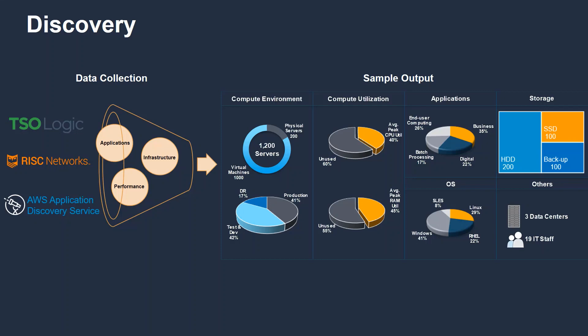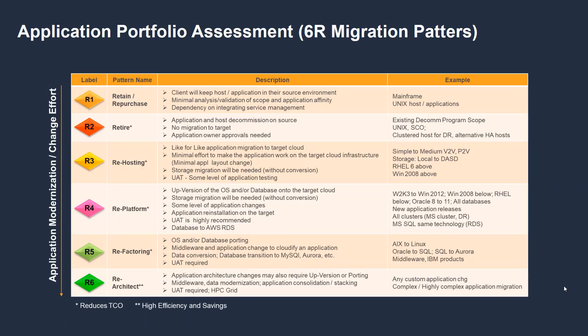Once you have this information, you go deeper into the application side and try to understand which applications you are going to keep, which you are going to retire, and which you are going to refactor. We have a way of categorizing applications into six different options.